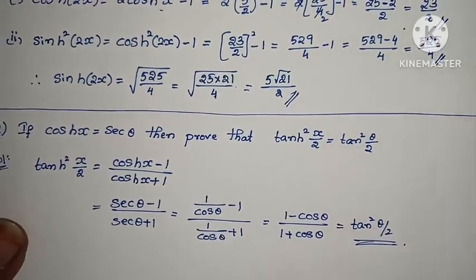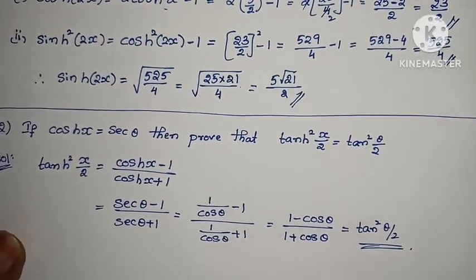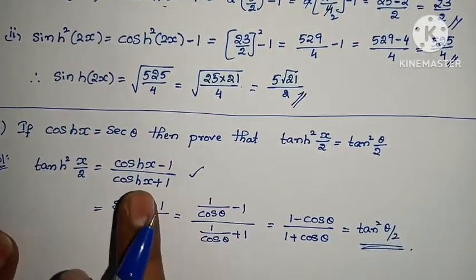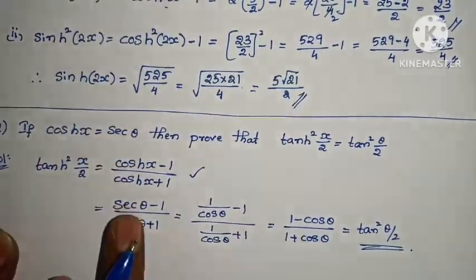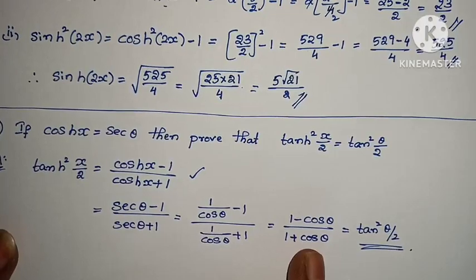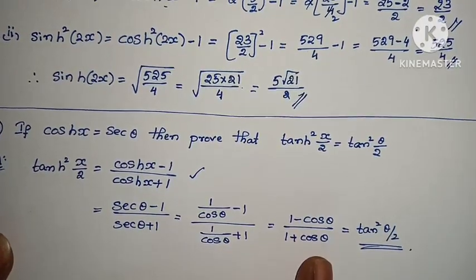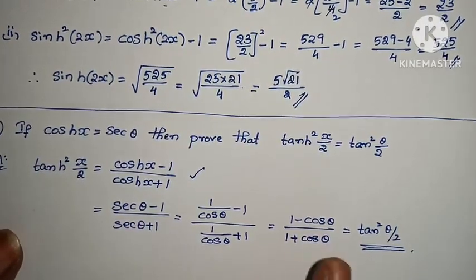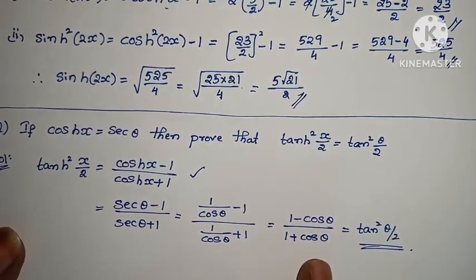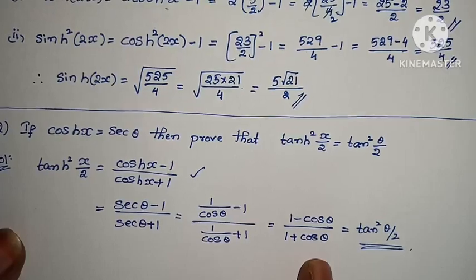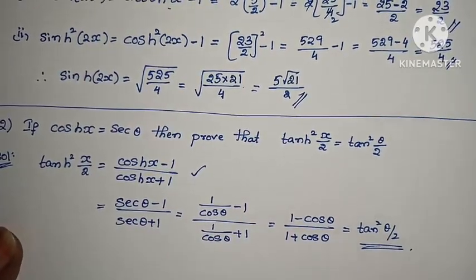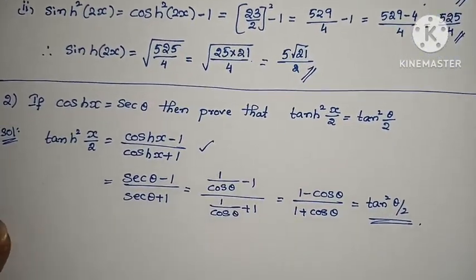The direct trigonometric formula gives us (1 − cosθ)/(1 + cosθ) = tan²(θ/2). So tanh²(x/2) = tan²(θ/2). This is a direct formula from trigonometric ratios. Hence the problem is complete.